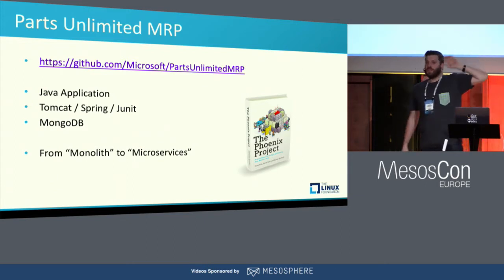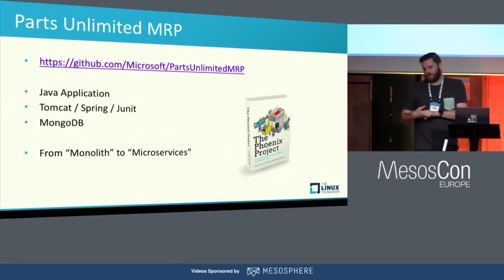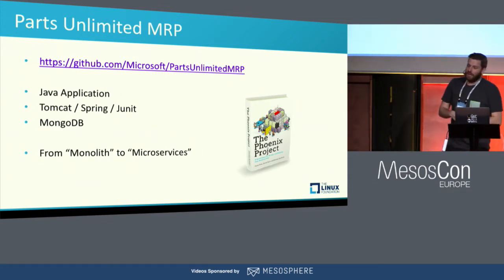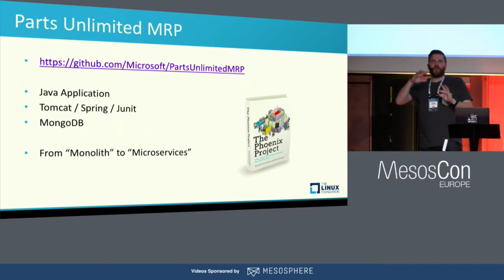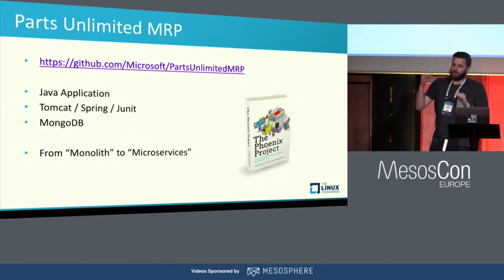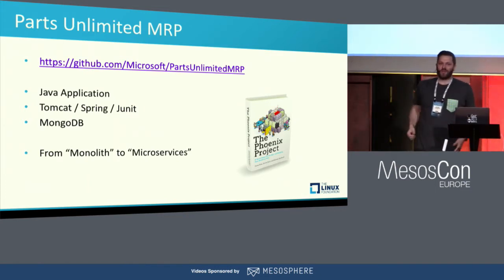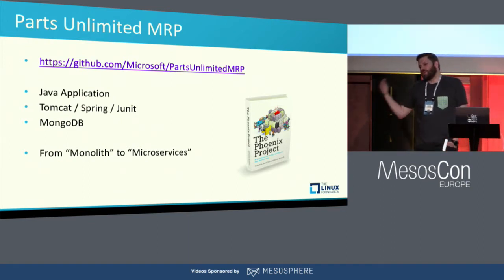This application is public, uses only open-source technology — it's Java-based, running Tomcat, using MongoDB, and so on. If you go to the Microsoft repo, it's kind of a monolithic application. What I'm going to try to do is split it into microservices — because it's trendy. We're going to try to do microservices from that, then deploy on DCOS and implement DevOps practices around that.